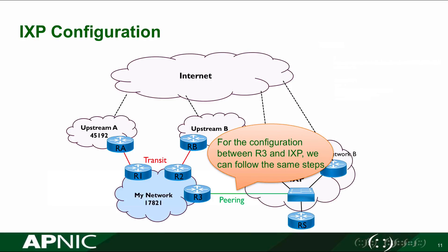In this part, we will see the IXP configuration. In the diagram, R3 is connected to the Internet Exchange and there is a route server. We need to perform the same 5 steps from R3 to the route server with similar configuration. My network is advertising our own prefix to the Internet Exchange and receiving local prefixes from the Internet Exchange point.